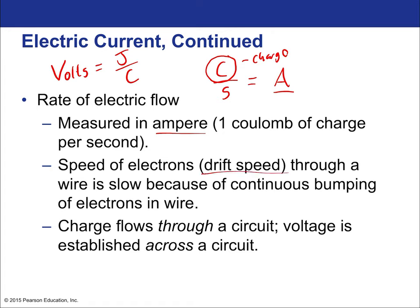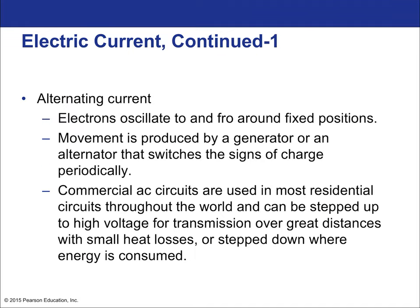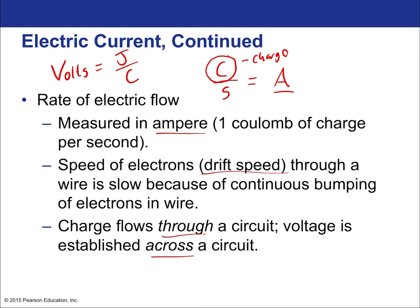The speed of electrons — called the drift speed — through a wire is slow because of the continuous bumping of electrons in the wire. So the actual ampere rate and the speed of electrons are totally different quantities. Charge flows through a circuit; voltage is established across the circuit. So: charge flows through it, voltage is across it. There's a voltage difference — potential energy difference divided by charge — that's across the whole circuit, but the actual flow within it is the charge.